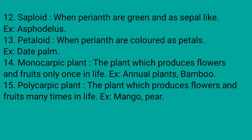Monocarpic plant: a plant which produces flowers and fruits only once in its life is called a monocarpic plant. Example: annual plants, bamboo. Polycarpic plants: plants which produce flowers and fruits many times in their life are called polycarpic plants. Example: mango and pear.